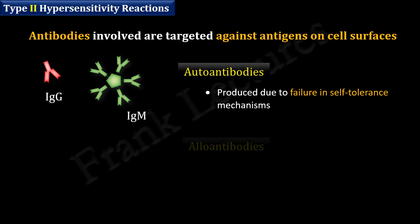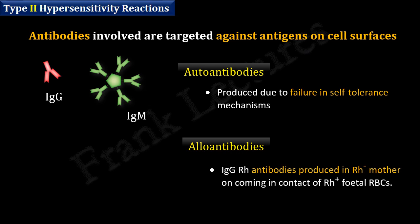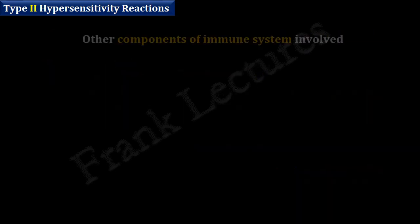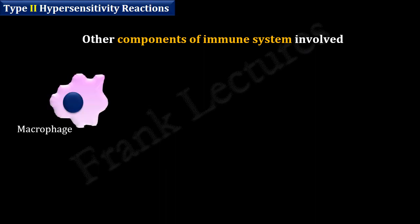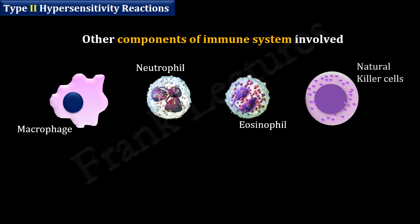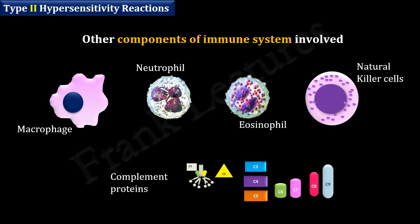They can also be allo-antibodies — that is, antibodies produced in response to allo-antigens. For example, IgG RH antibodies are produced in an RH-negative mother upon coming into contact with RH-positive fetal red blood cells. Besides antibodies, the other immune components involved are macrophages, neutrophils, eosinophils, natural killer cells, and complement proteins.